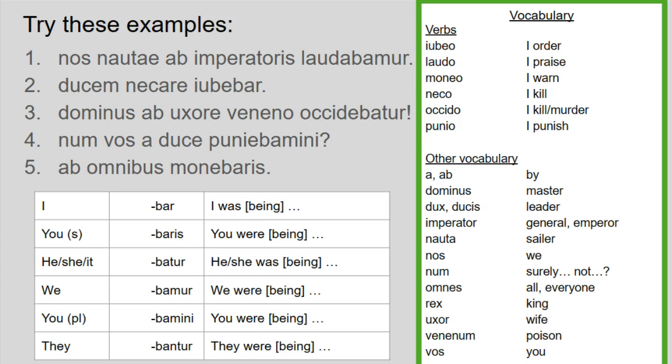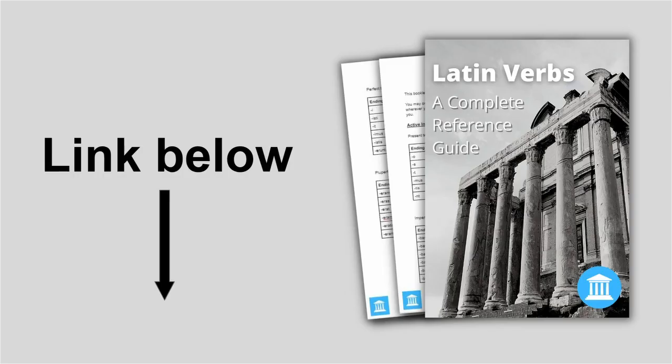And that's imperfect passives. They're really simple to spot because they've still got that 'ba' and then they just follow the present passive endings. If you're not sure about any of the endings, do go and grab that Latin verbs complete reference guide from the link in the description below — it will really help you and it's completely free. Thank you so much for watching. If you have any questions or comments, leave them for me below and I'll see you next time on Bambas Bat.